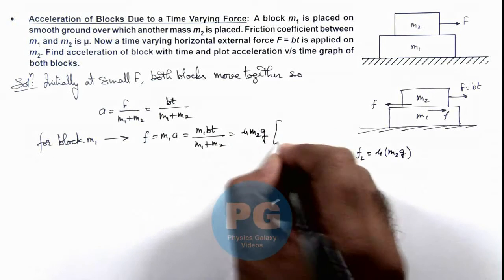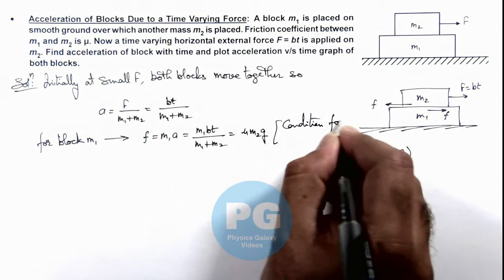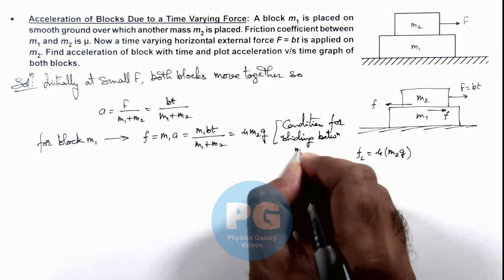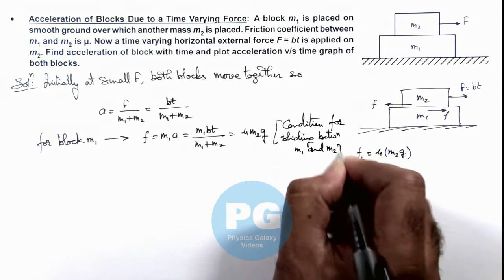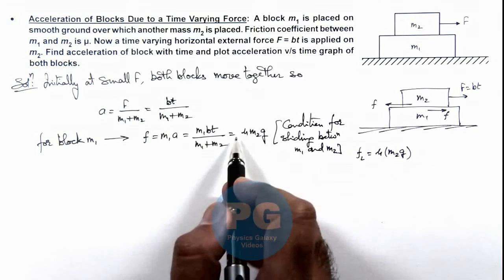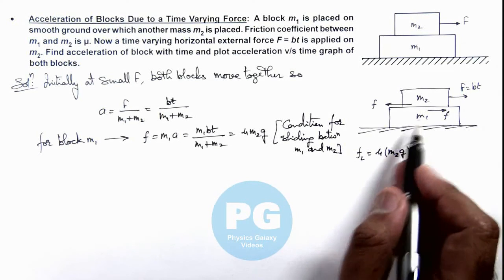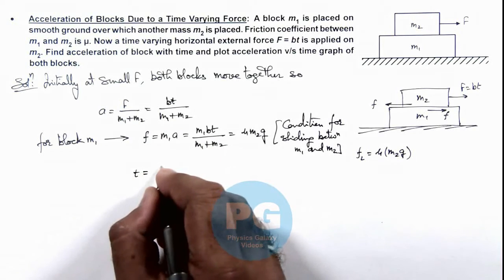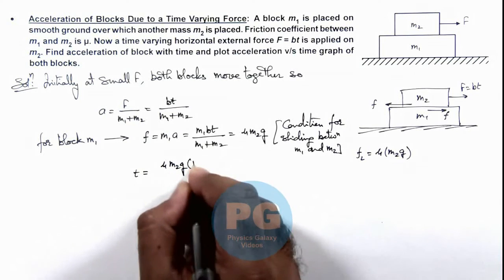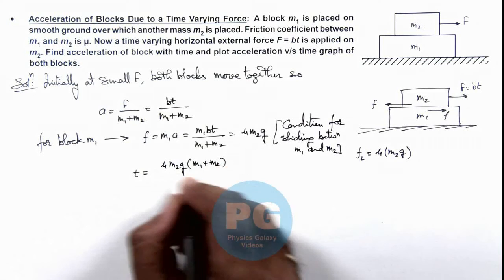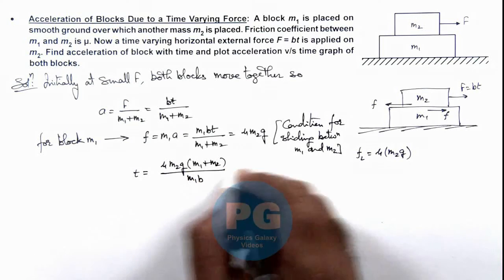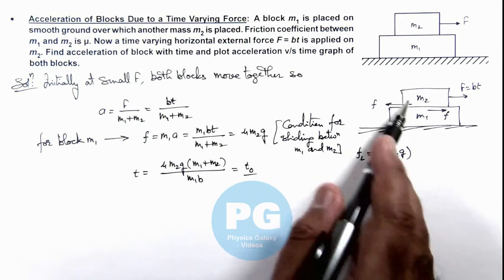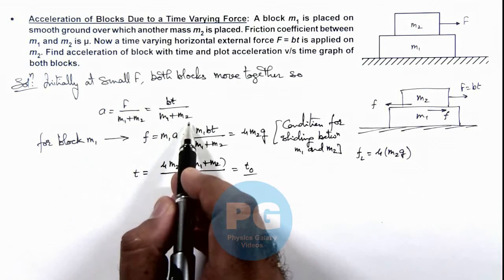When friction becomes mu × m2 × g, that is the condition for sliding between m1 and m2. When friction approaches the limiting value, sliding between m1 and m2 will start, and we get a critical value of time. The time t0 when sliding starts is: t0 = (mu × m2 × g × (m1 + m2)) / (m1 × b). From time zero to t0, both blocks have acceleration bt / (m1 + m2).